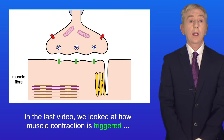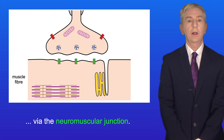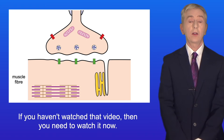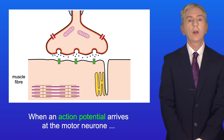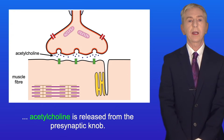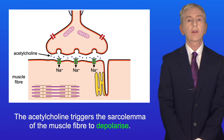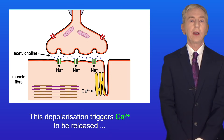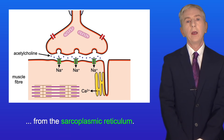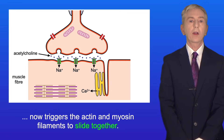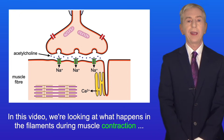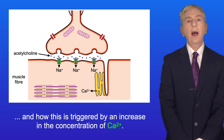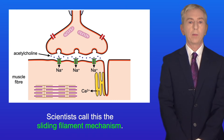In the last video, we looked at how muscle contraction is triggered via the neuromuscular junction — if you haven't watched that video, you need to watch it now. When an action potential arrives at the motor neuron, acetylcholine is released from the presynaptic knob. The acetylcholine triggers the sarcolemma of the muscle fiber to depolarize, and this depolarization triggers calcium ions to be released from the sarcoplasmic reticulum. The increased concentration of calcium ions triggers the actin and myosin filaments to slide together — scientists call this the sliding filament mechanism.